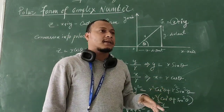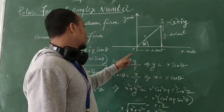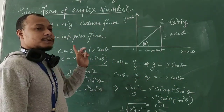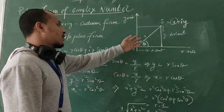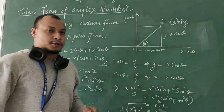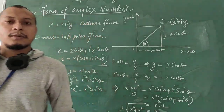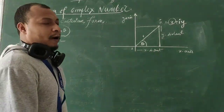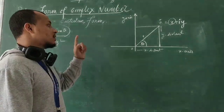So if you are given a complex number in Cartesian form and asked to find its polar form, you use this formula R = √(X² + Y²). Now we also need to find θ, the angle of inclination with respect to the X axis.